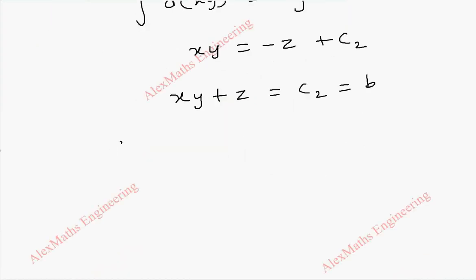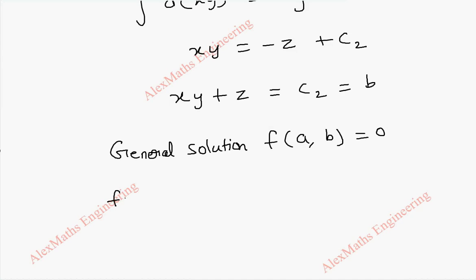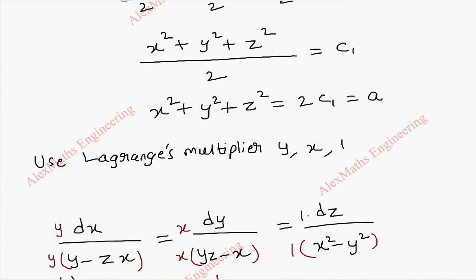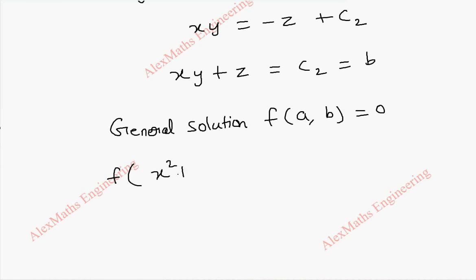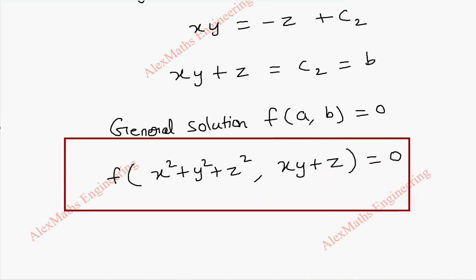Now after getting a and b, we can write the general solution. The general solution is of the form f of a comma b equal to 0. This means f of x square plus y square plus z square comma xy plus z equal to 0. Thus we got the general solution for the given partial differential equation using Lagrange's multiplier method.